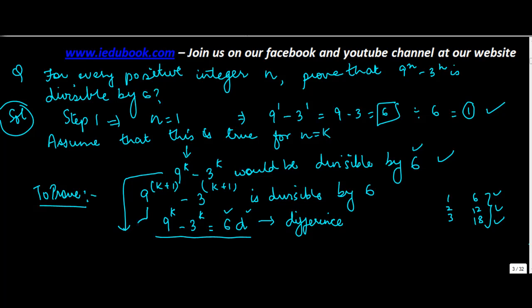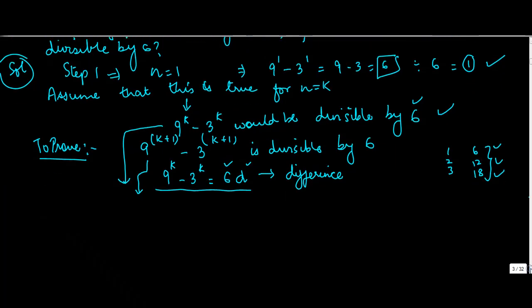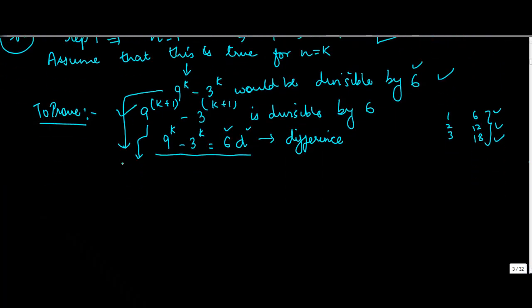In this particular equation, we will expand 9^(k+1) minus 3^(k+1). The idea is to bring this into such a form that it equals 6 times something.